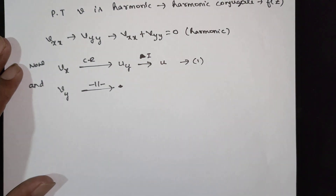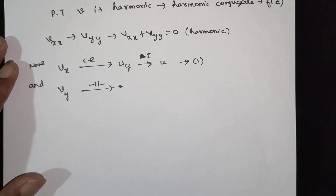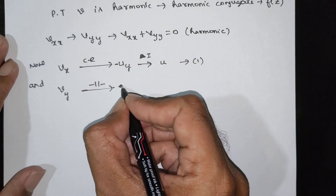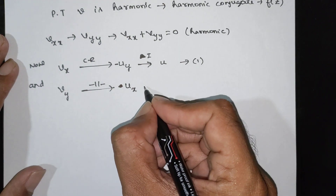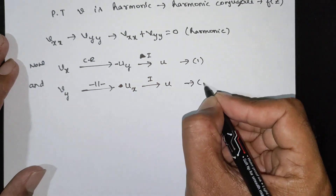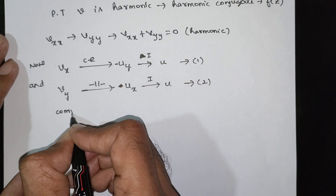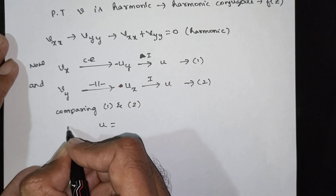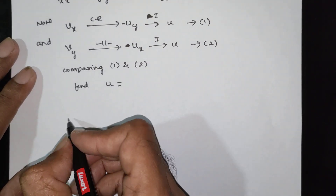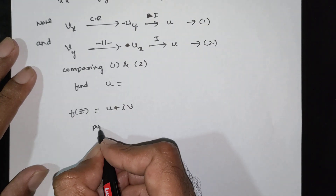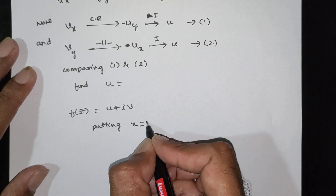Recall that the CR equations are vx equals negative uy, and vy equals ux. The procedure is: find ux and uy, integrate using the CR equations, compare the two expressions for v, then find f of z by putting x equal to z and y equal to 0.